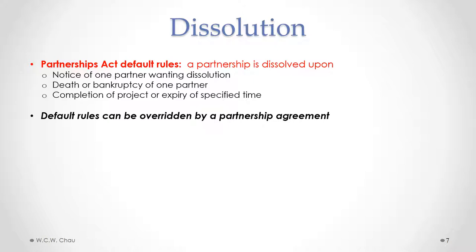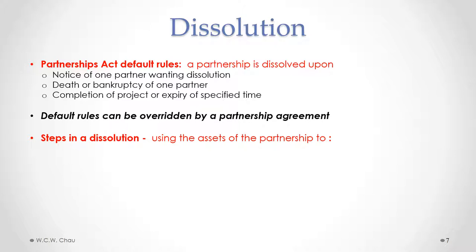These default rules can be overridden by a partnership agreement. Usually a partnership agreement would set out different rules for dissolution, because you don't want to give one partner the power to dissolve the whole partnership, and you don't want the death or bankruptcy of just one partner to automatically trigger dissolution.